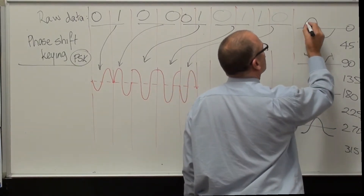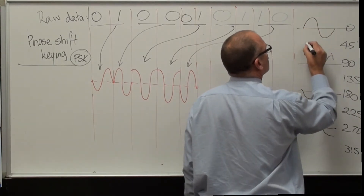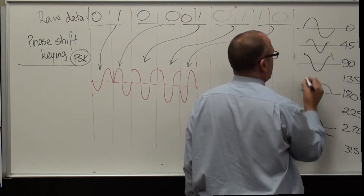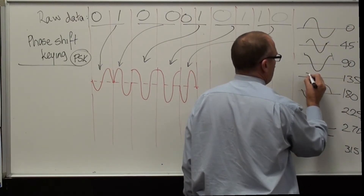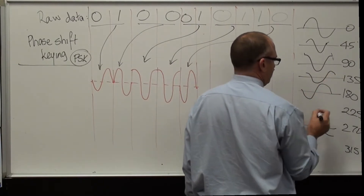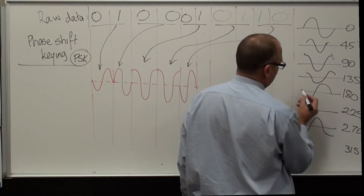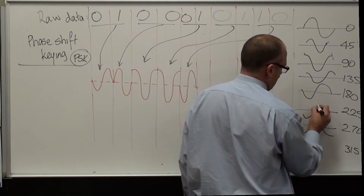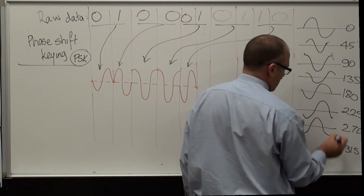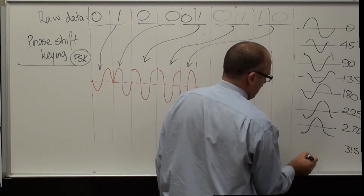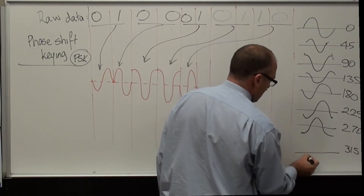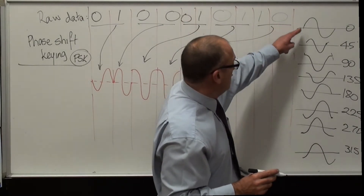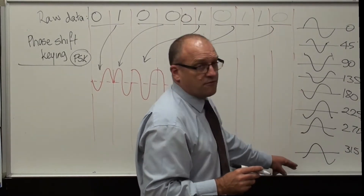The 45 starts at that point and goes out. The 135 starts here on the down, as it's falling down. 225 starts here, so that starts there. It stops, and 315 starts on about that upstroke, so it starts about there. So we have got 8 different waveforms now.